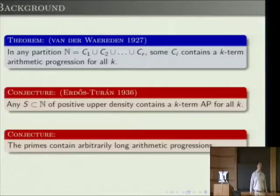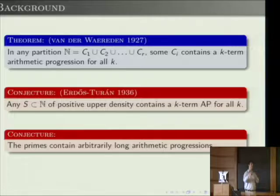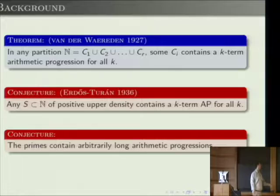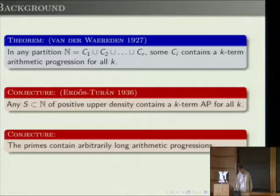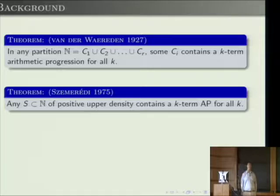The equivalent finite version says: for every epsilon greater than zero and positive integer k, there's some number n such that any subset of the first n positive integers with at least epsilon·n elements contains a k-term arithmetic progression. The Erdős-Turán conjecture was proved by Roth for k=3 in the early 1950s, and by Szemerédi for all k in the mid-1970s.